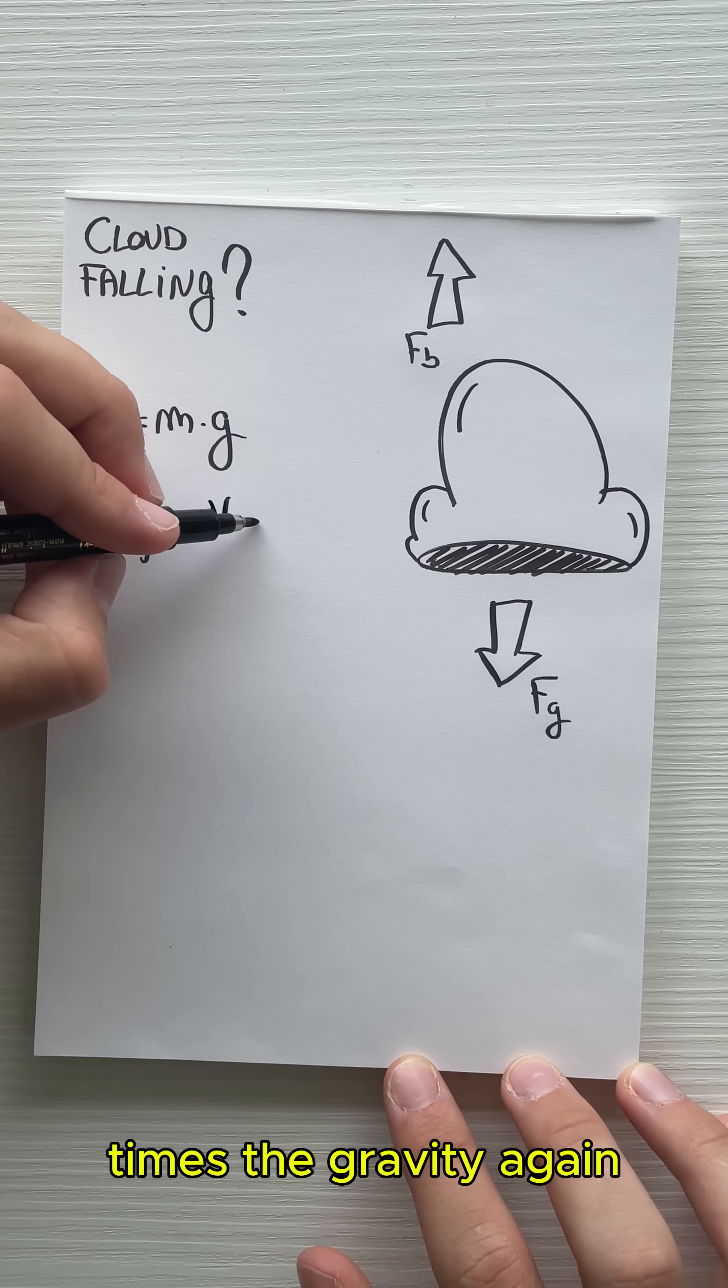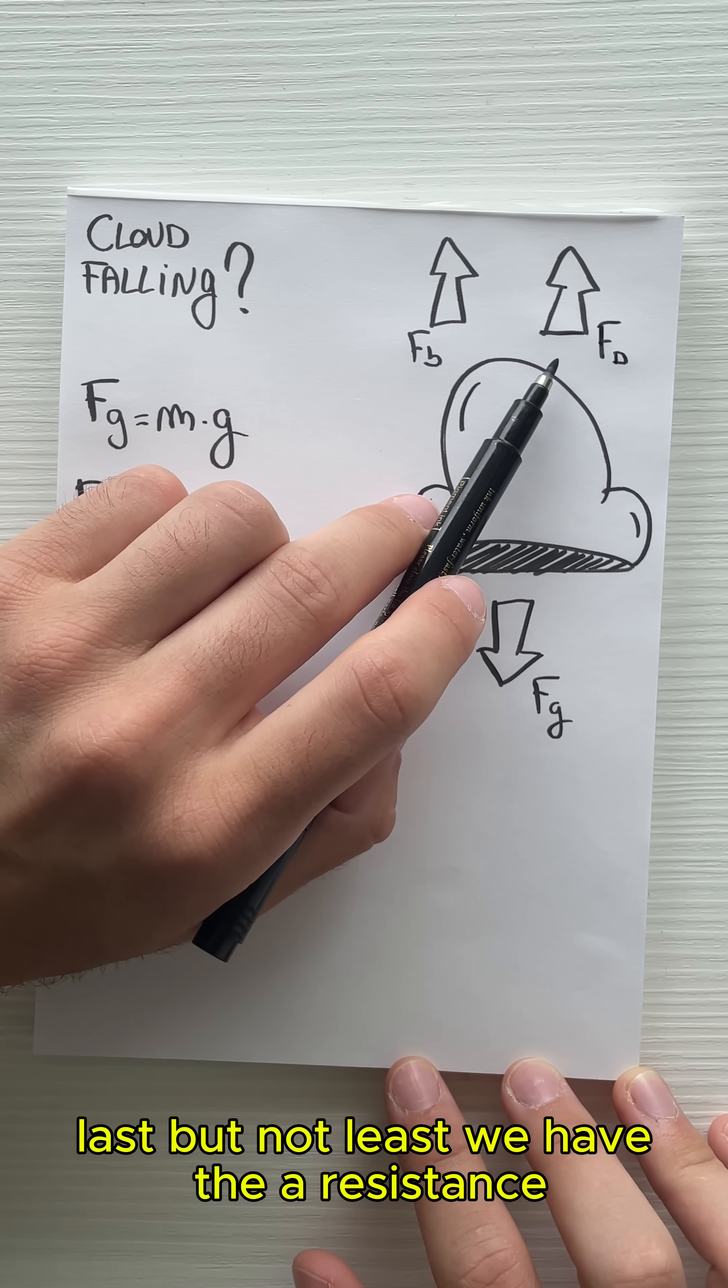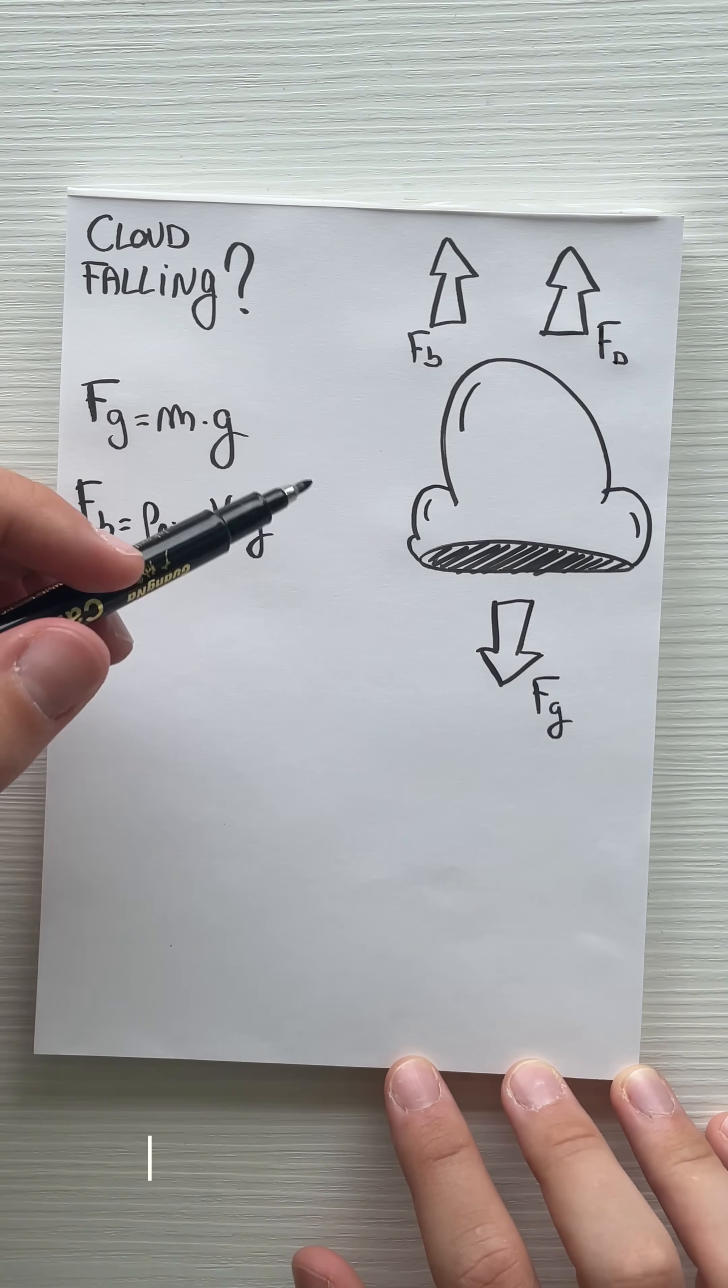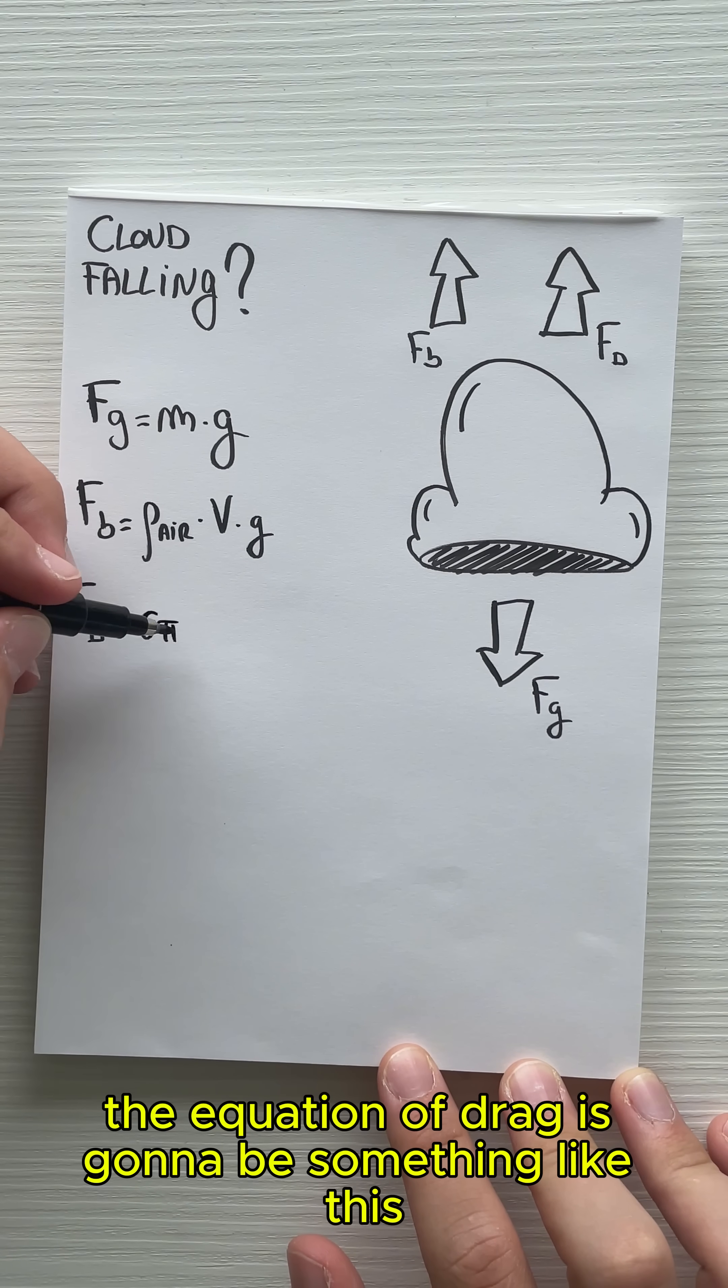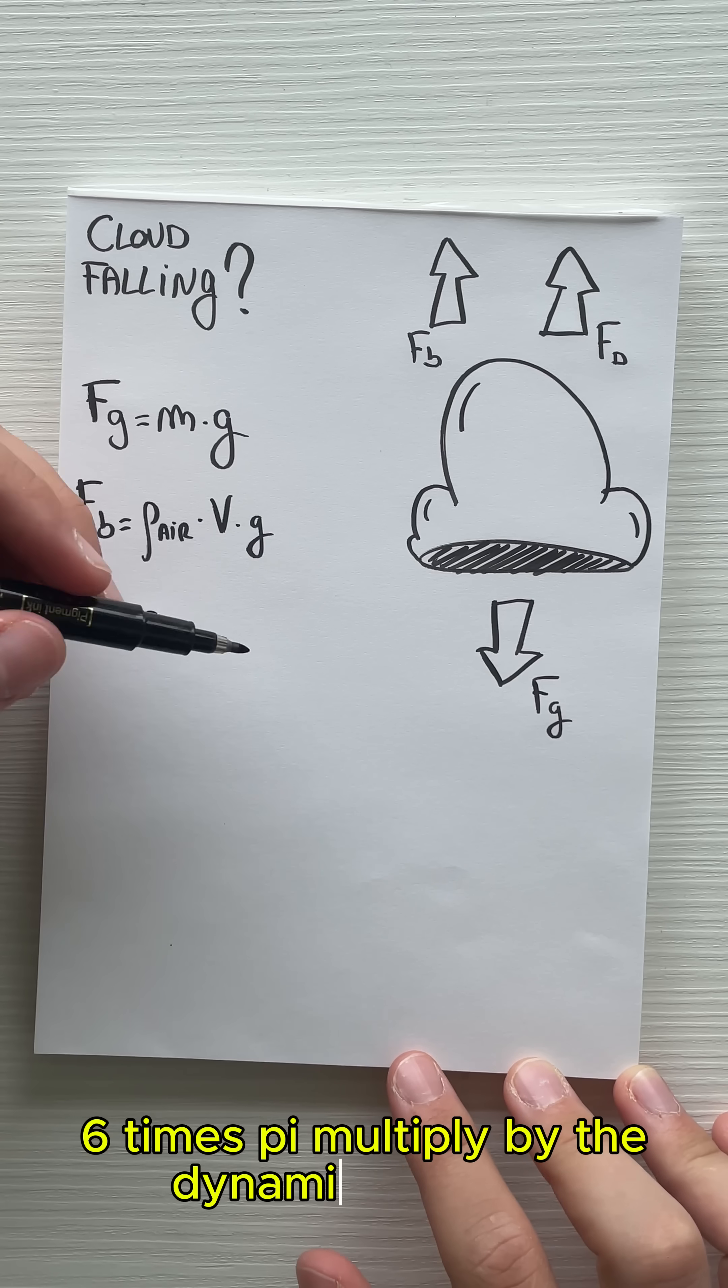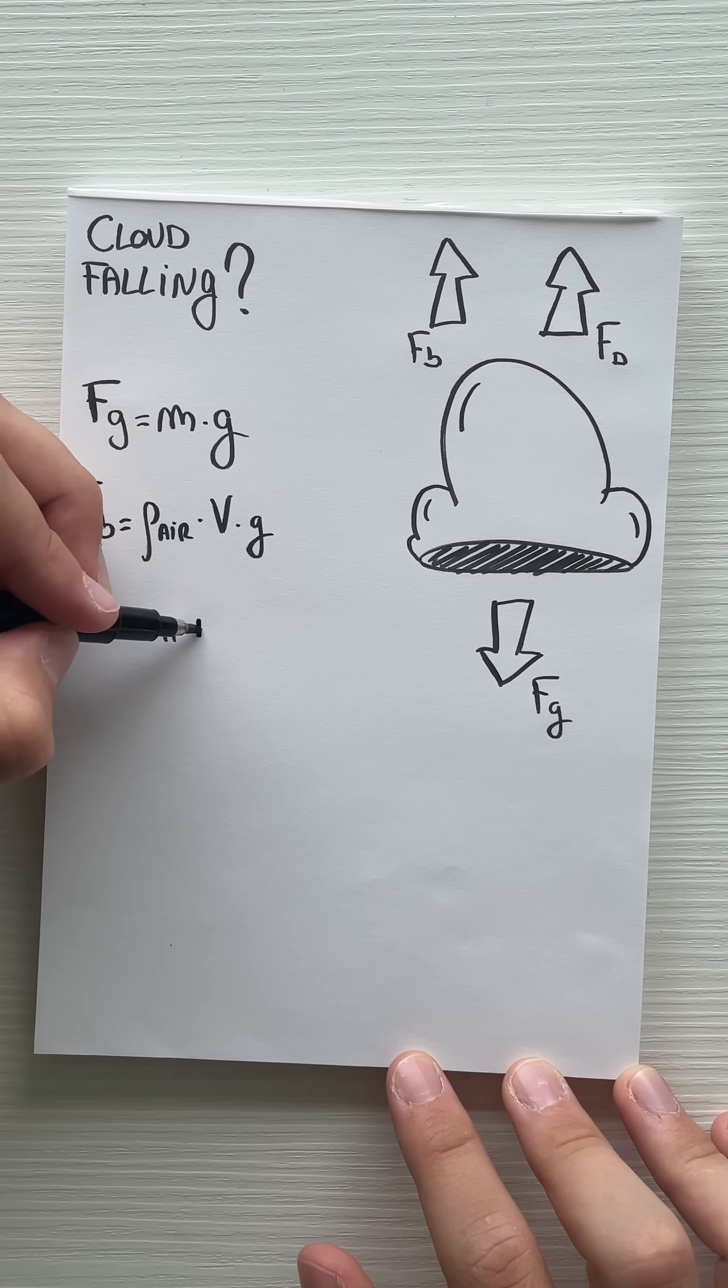Last but not least, we have the air resistance, in other words drag. For this particular case, the equation of drag is going to be something like this: 6π multiplied by the dynamic viscosity, the radius of a single droplet, and the velocity of the droplet.